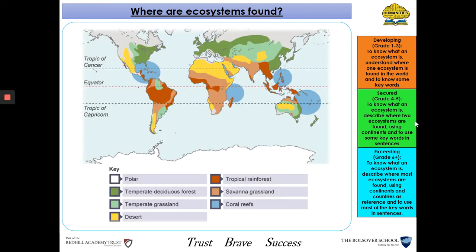Ecosystems are found in particular parts of the world. If we have a look at the key, we can see that the grey and white parts of the world are our polar regions, including Antarctica at the bottom and parts of northern Canada and northern Russia. We've also got deserts, indicated in yellow, found in northern Africa, parts of Australia, Asia, South America and North America. Ecosystems also include aquatic ecosystems, such as our coral reefs, found off the coasts of North America, northern South America, Africa, Asia and Oceania.